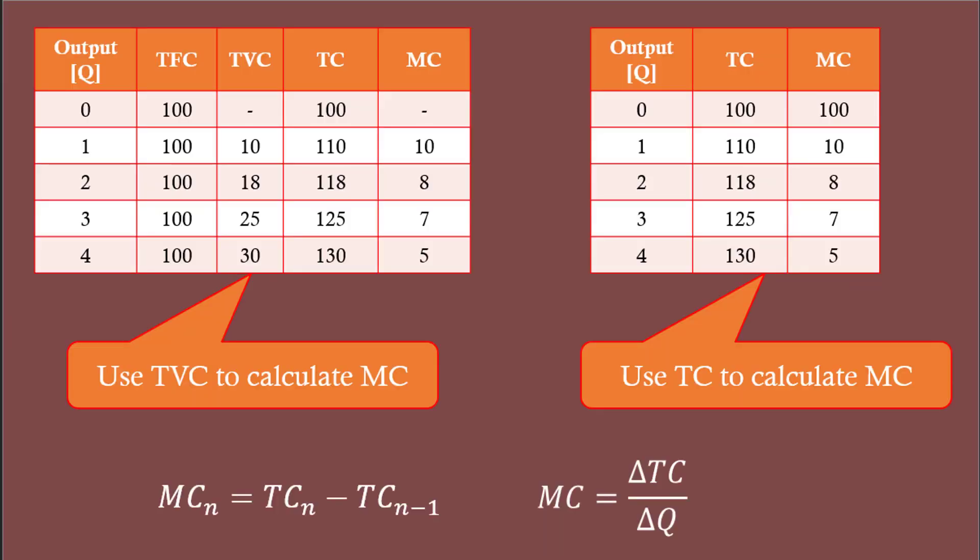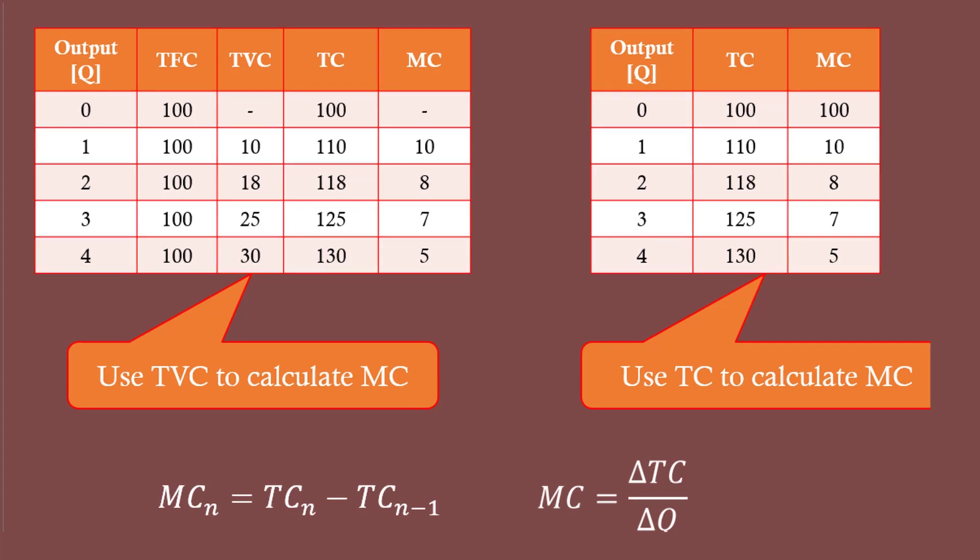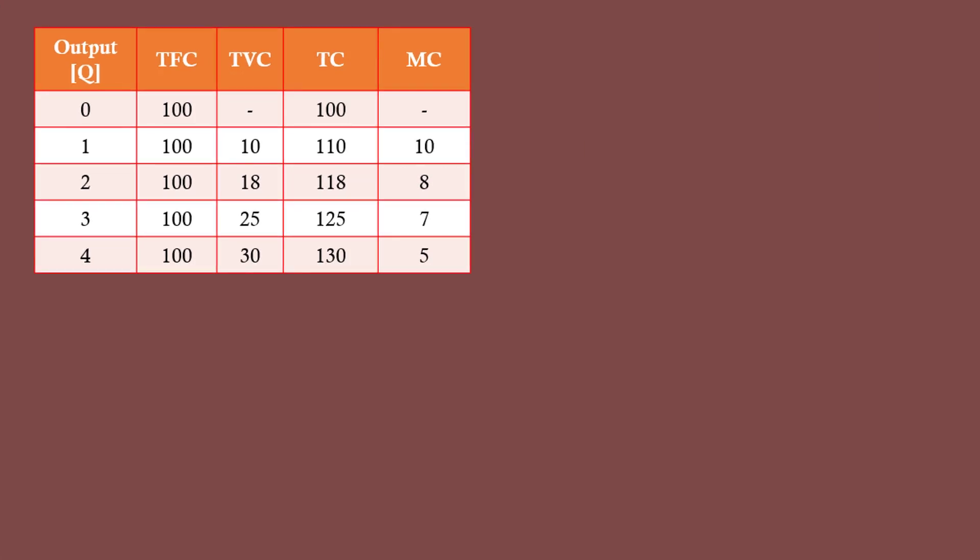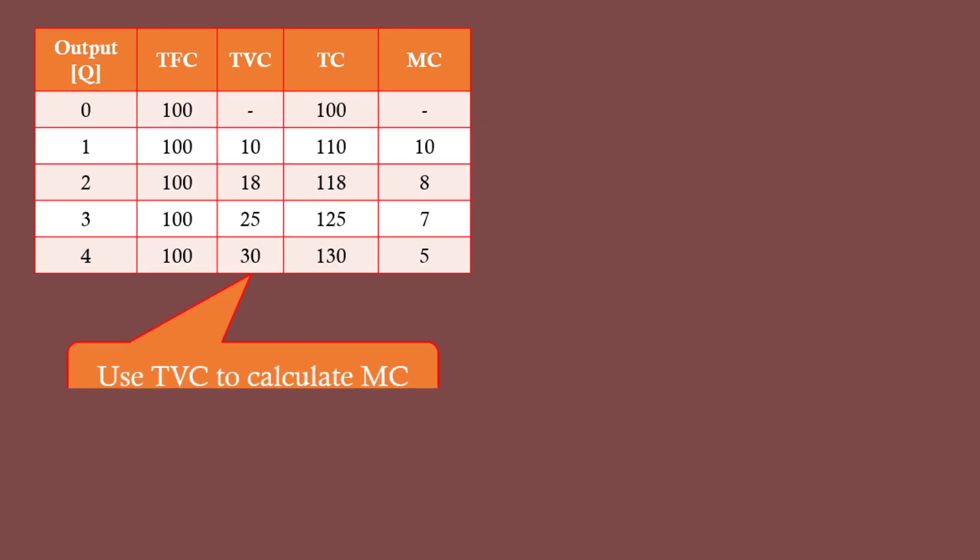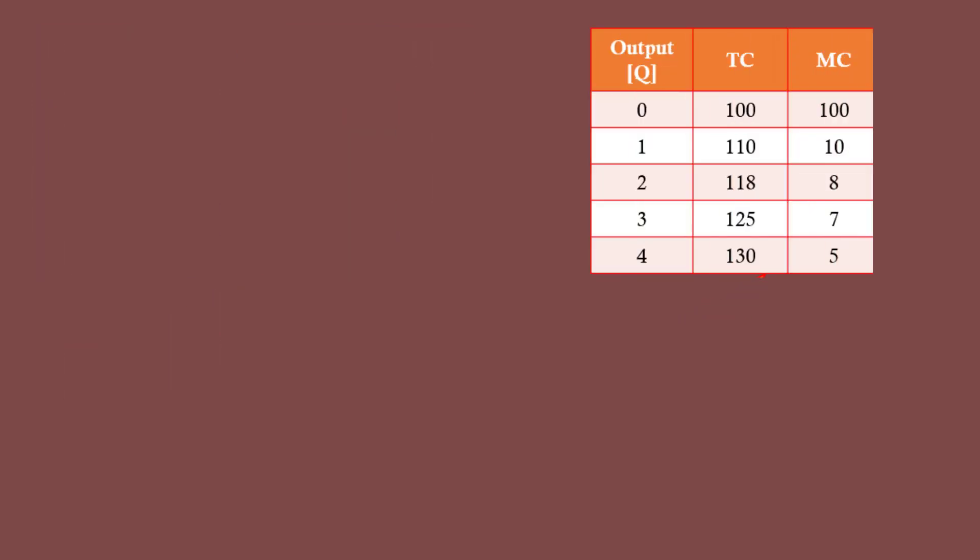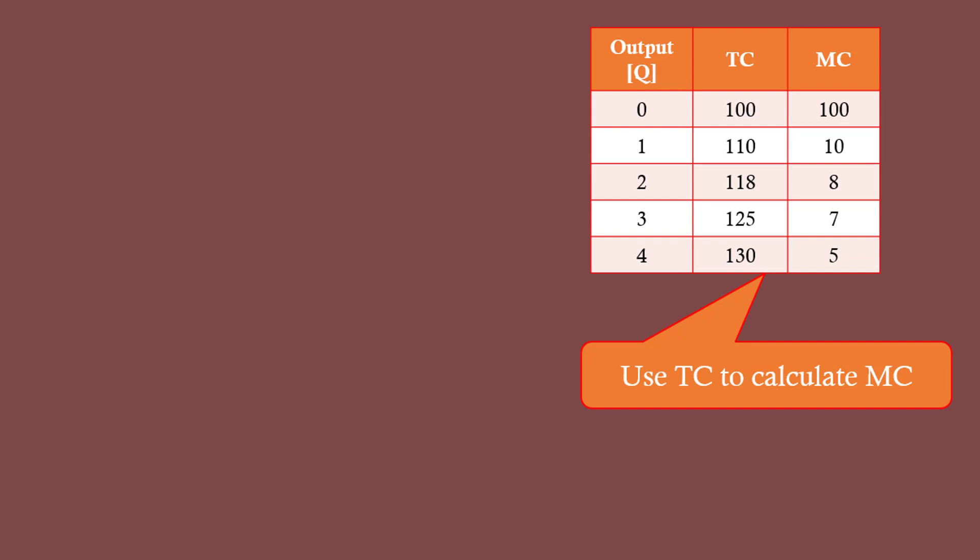Important note: Look at these two tables. In this table, total variable cost and total cost are given. In such case, you must use total variable cost to calculate marginal cost. In this table, only total cost value is given. In this case, you shall calculate marginal cost from total cost.